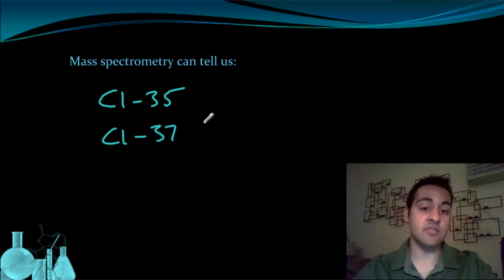it will tell us that these are the two masses of the isotopes in the sample. We'll also find out that any sample of chlorine will have 75.8% chlorine-35 and 24.2% chlorine-37. This is all information we would get from a mass spec.